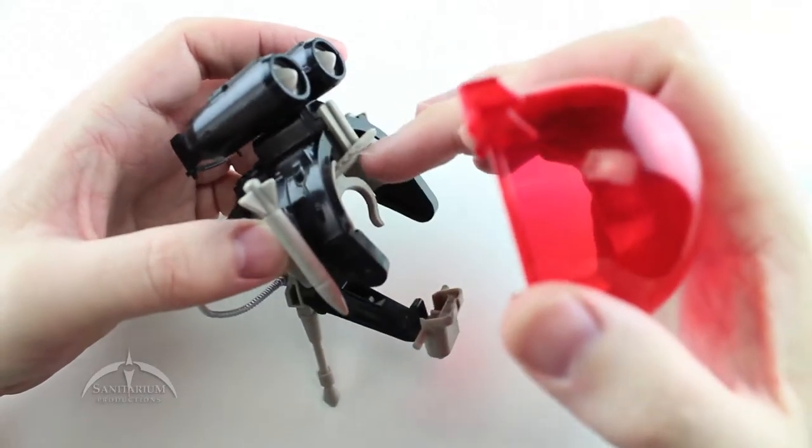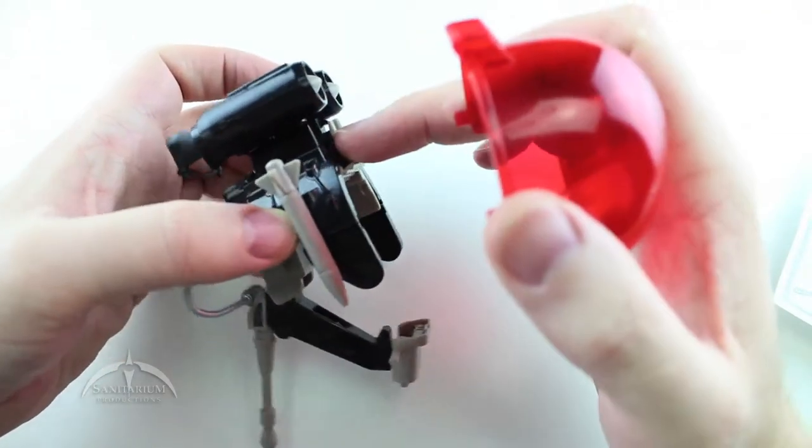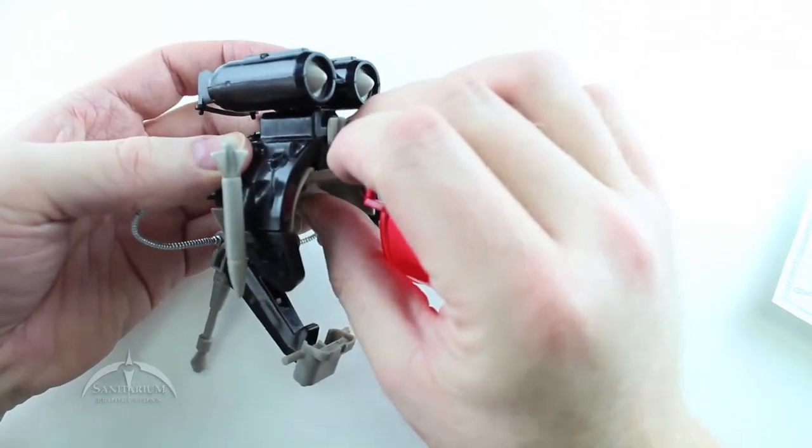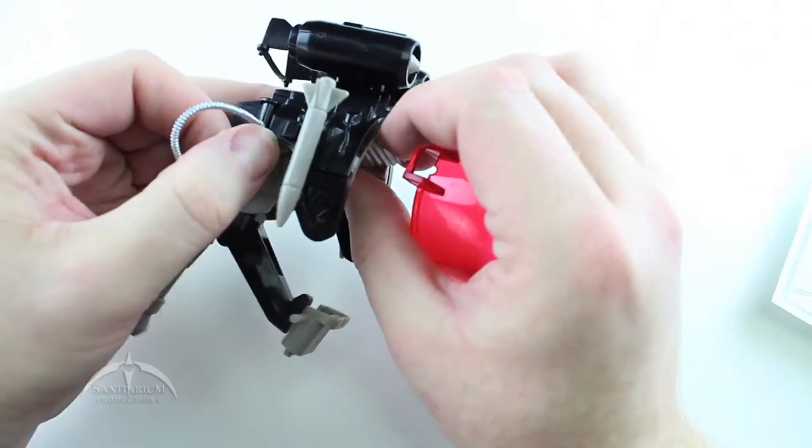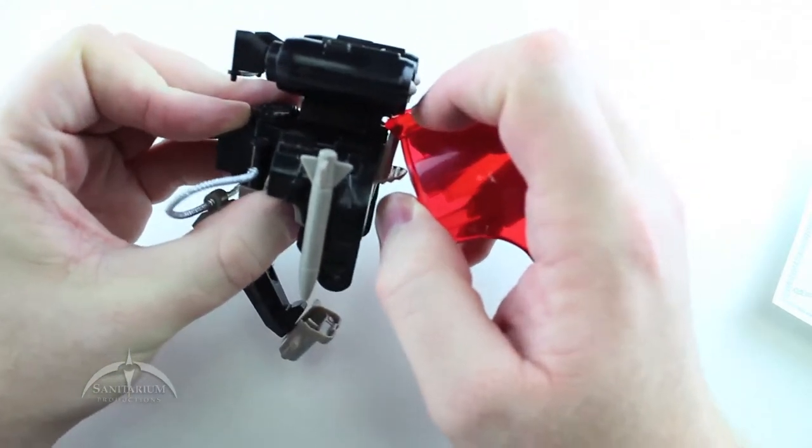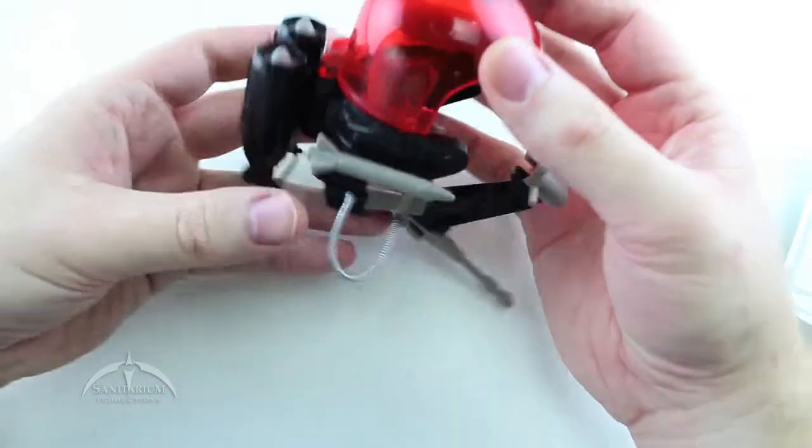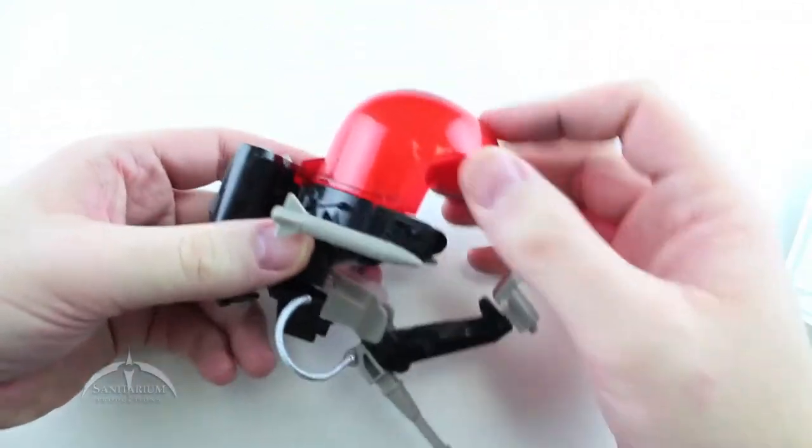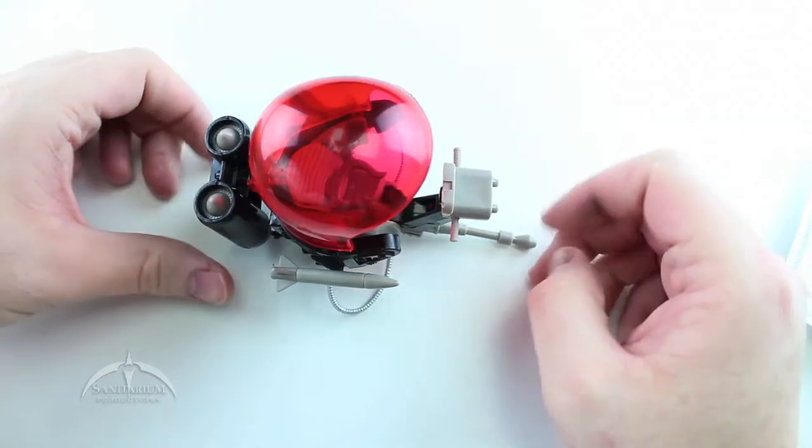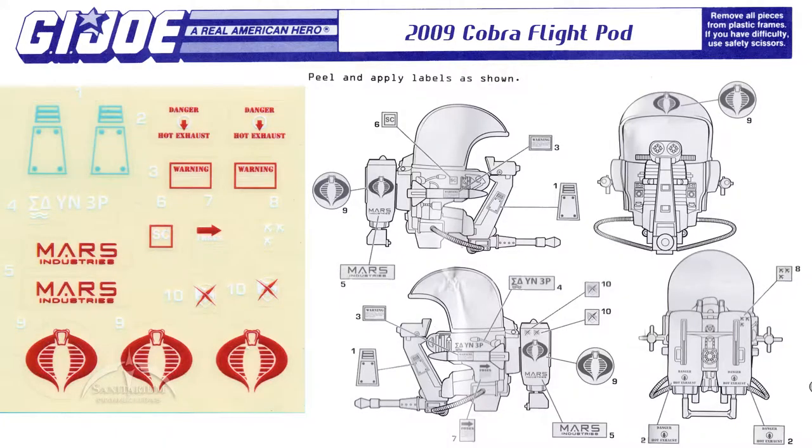The final step is just to attach the canopy and it's on a hinge joint. On the back of the pod itself where the seating portion attaches to the body, there's a little hinge point. You're going to have to pull the seat out just a little bit because it's in there pretty tight. Just kind of pull up on it as you push down and this will snap into place. Now you have your hinged canopy that opens and closes. That's essentially all there is to construct your very own Cobra Flight Pod, aka the Trouble Bubble.